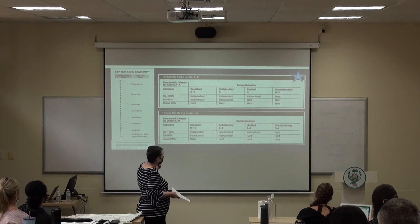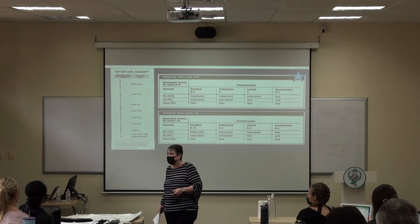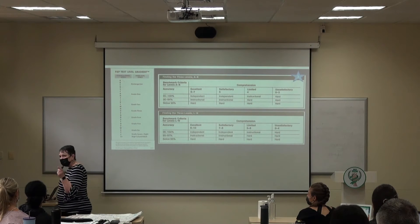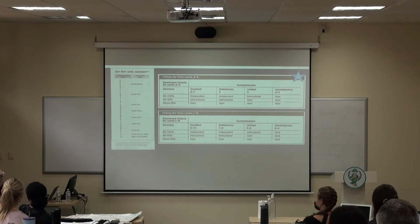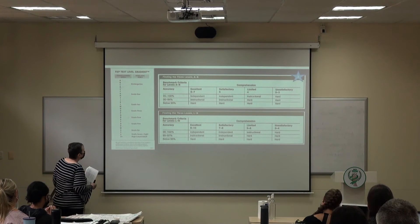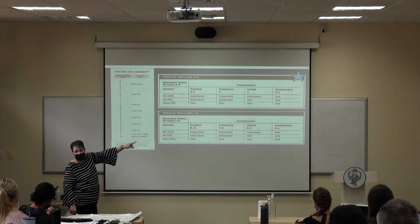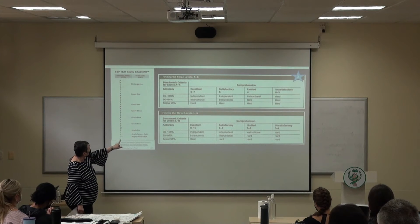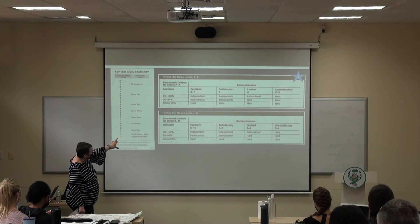Grades four and five have a little different system. You have to listen to a bit of it so you can try to get a feel for their decoding and accuracy. When we do the running records today, we'll figure out how to find their accuracy and what that means. You can see the top section is for levels A through K, and L through N is at the bottom — it's a little bit different.